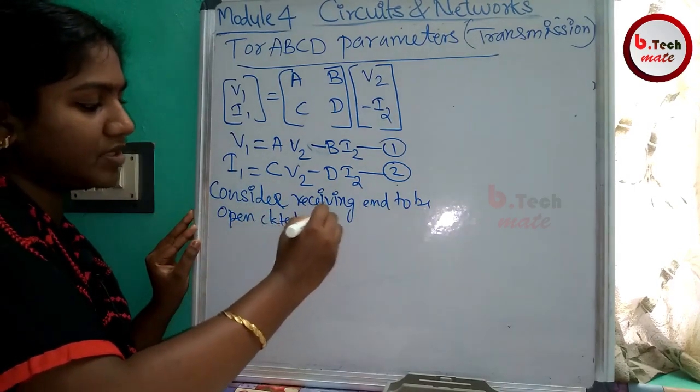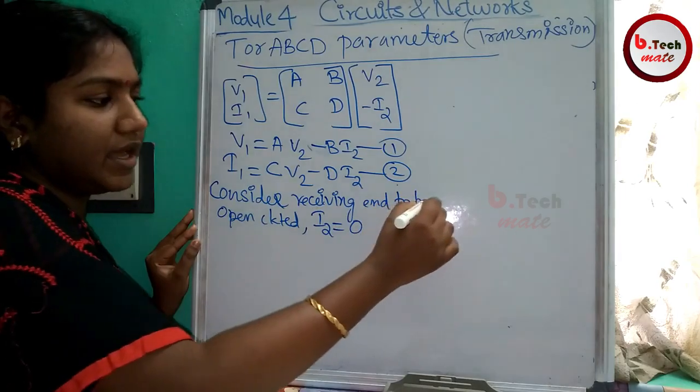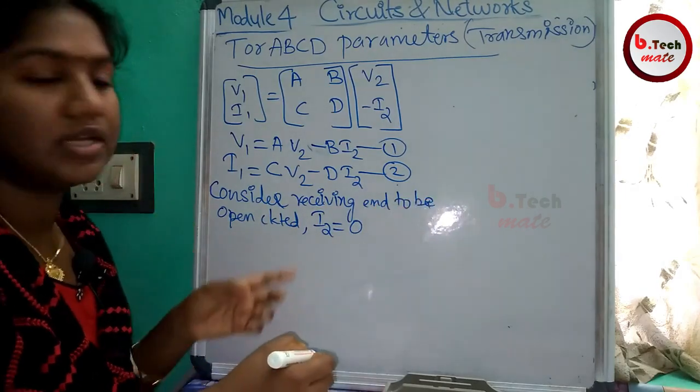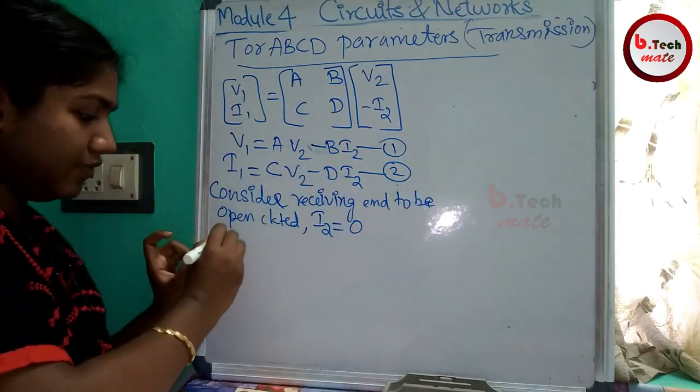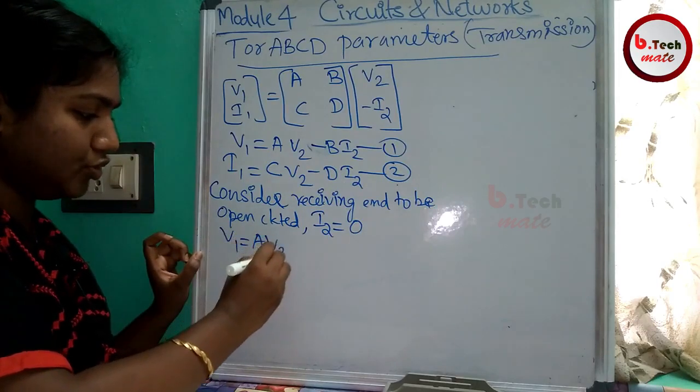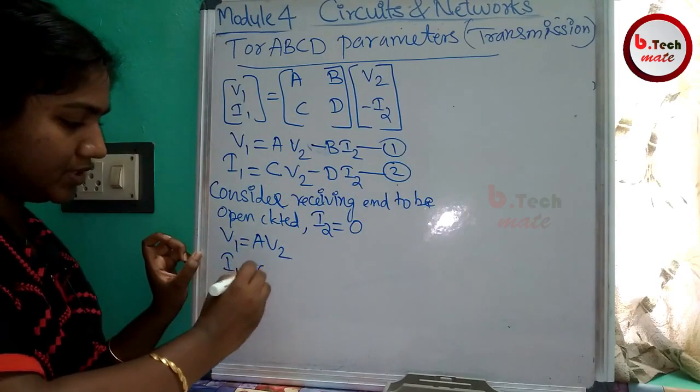The current in receiving end is 0. That is, I2 is 0. In these two equations, I2 is 0. V1 equals AV2, I1 equals CV2.